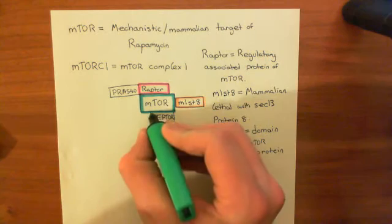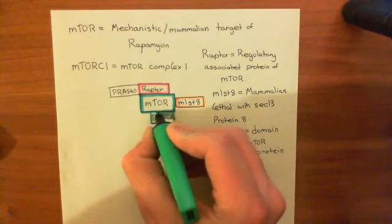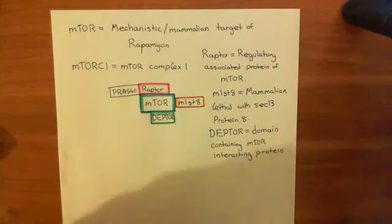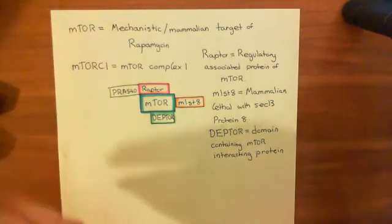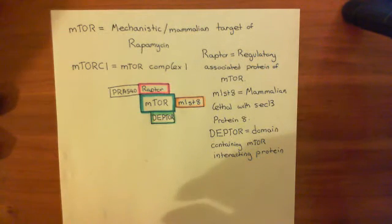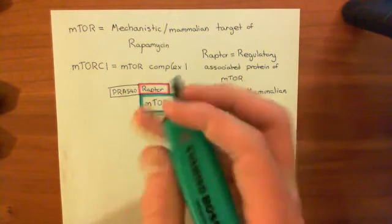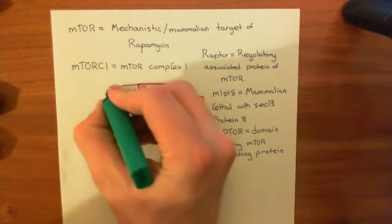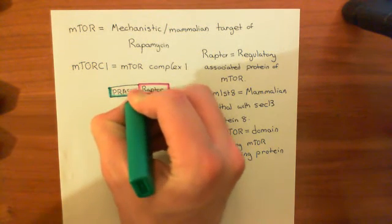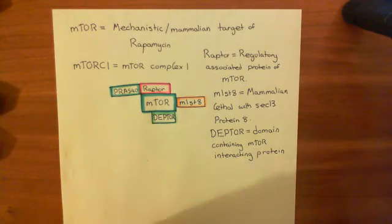So we'll have DEPTOR, this domain-containing mTOR-interacting protein, in green, and we'll have PRAZ40 in turquoise. Here now is the structure of this entire mTOR complex 1.